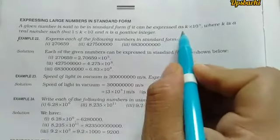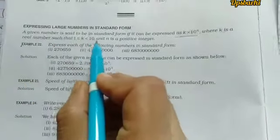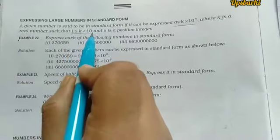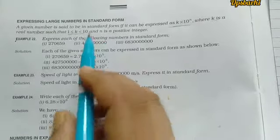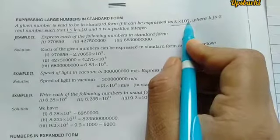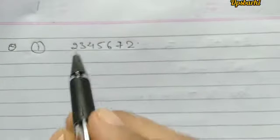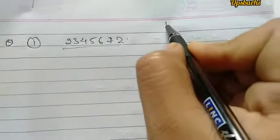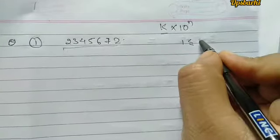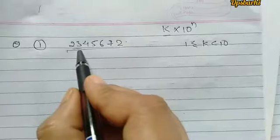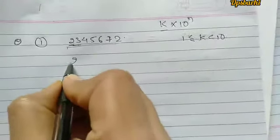We are going to write a number in the form k × 10 to the power n. The value of k is a real number between 1 and 10, and n is a positive integer. We will look at how to express numbers in this standard form.